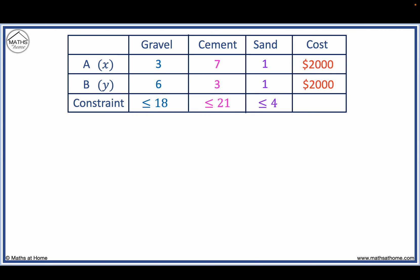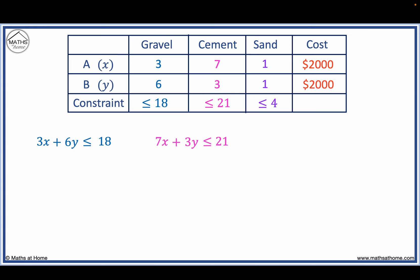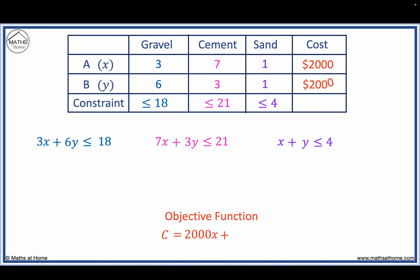The constraint equation for gravel is 3x plus 6y is less than or equal to 18. For cement, we have 7x plus 3y is less than or equal to 21. And for sand, we have x plus y is less than or equal to 4. The objective function to maximise cost is 2,000x plus 2,000y.